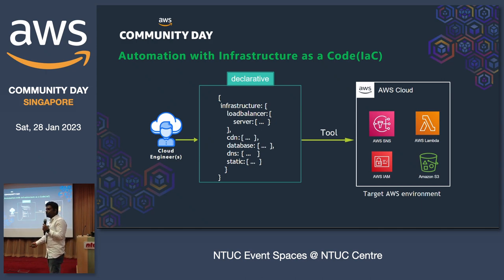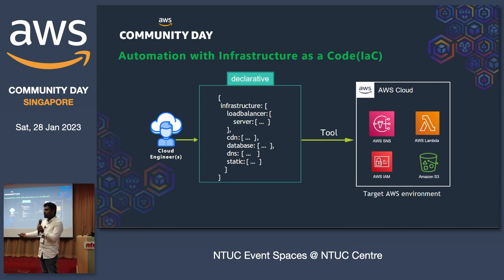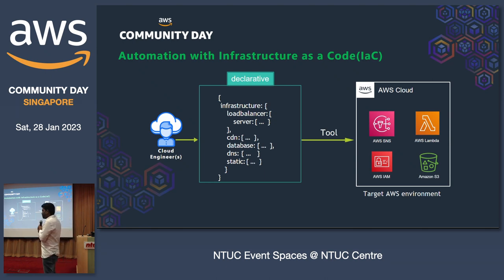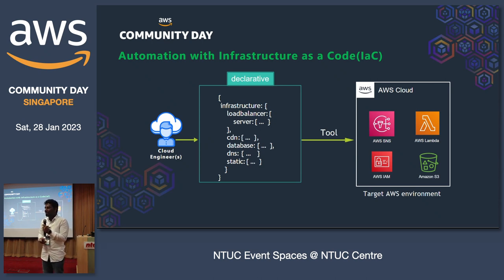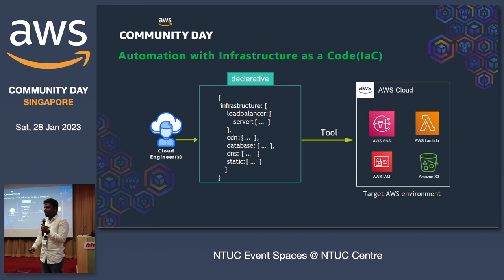When you have a cloud engineering team responsible for provisioning infrastructure, they'll be writing code and pushing it into a version control system or repository. From there, they'll be running some commands — most of the time also running commands on their local laptop. But how scalable is that when you have multiple people? You'll bring in a version control system to have multiple people commit code, and then apply the changes to a target environment.